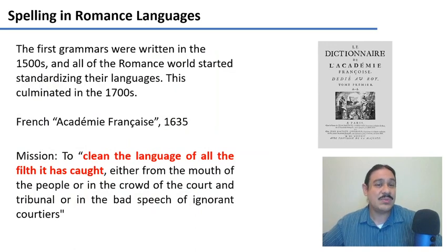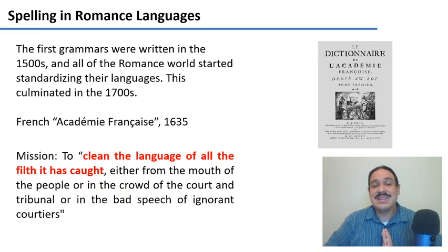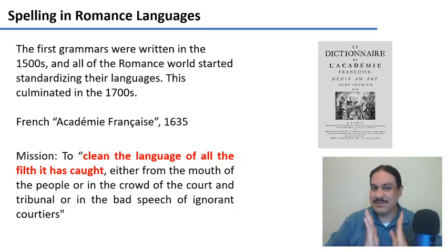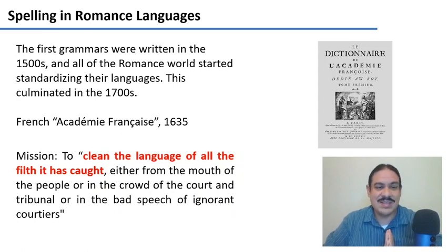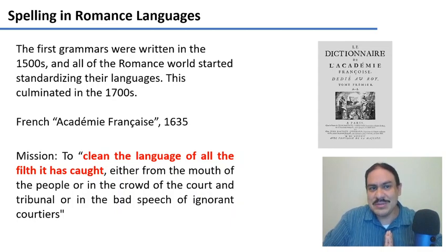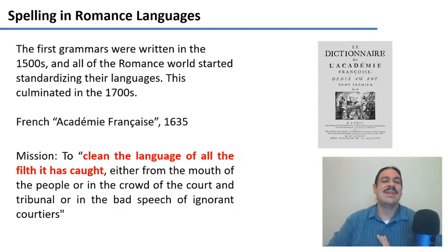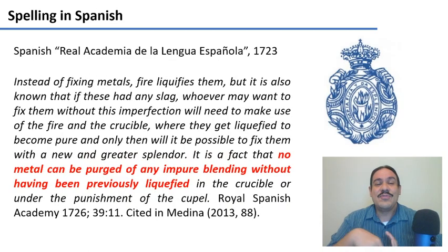With Romance languages, it has been a little worse. The concept of spelling mistake in Europe was invented in France in the 1930s and 50s, and the Académie Française was famously involved. Their mission was to clean the language of the filth it had caught in the mouths of the people or from the bad speech of ignorant courtiers. The French may have invented the poison, but the Royal Spanish Academy from Spain perfected it.